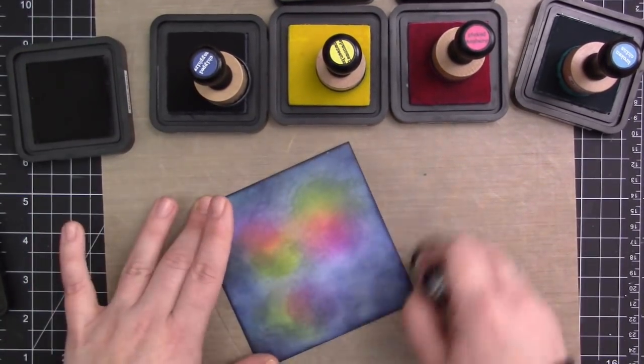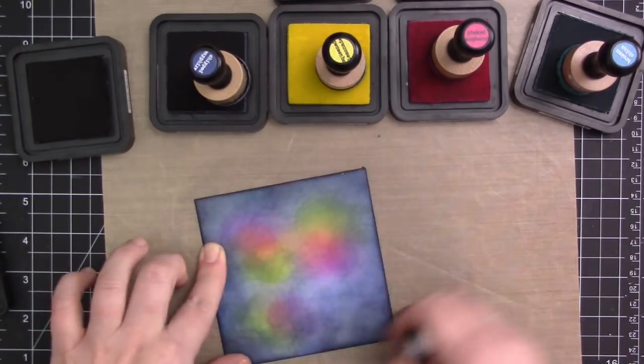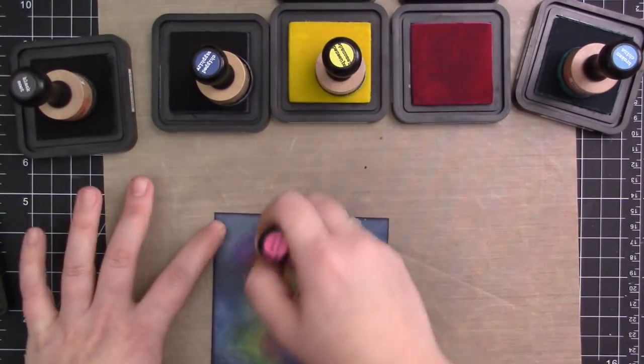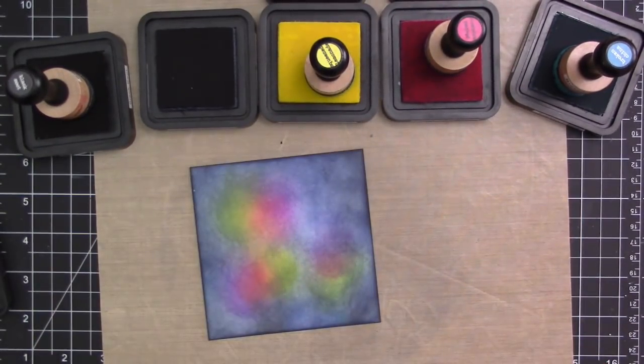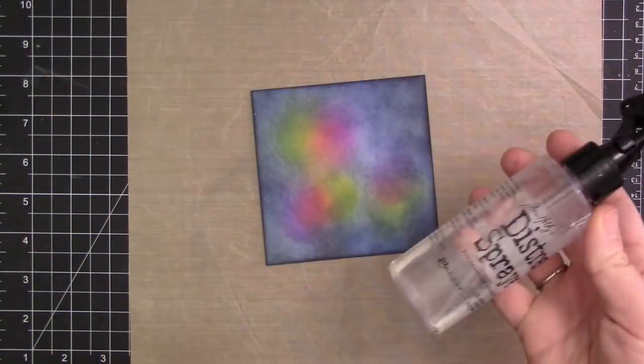So once I have all of the color on the middle area done, I'm just going to take some Black Soot and I'm going to go around the edges. You just want to be a little light-handed with the Black Soot. It is a very dark ink color, so if you don't want a ton of the black look you just want to kind of go lightly around the edges just to get the desired effect.